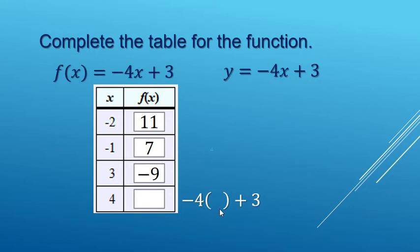And the last row, x is a 4. Negative 4 times 4 is negative 16 plus 3 makes negative 13.